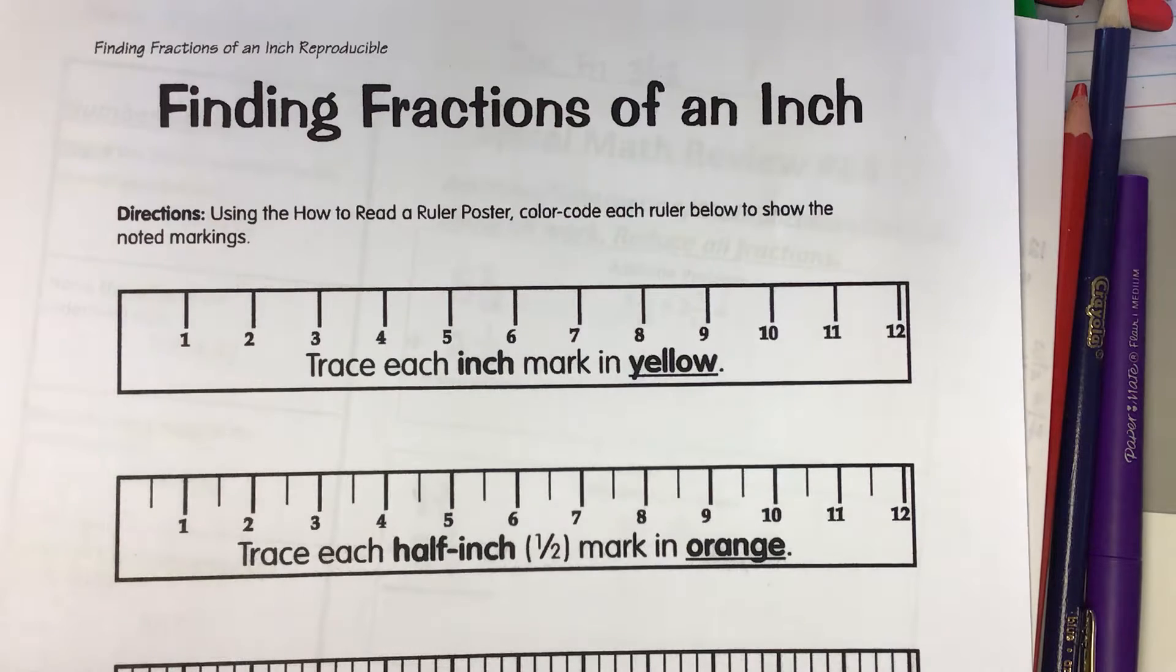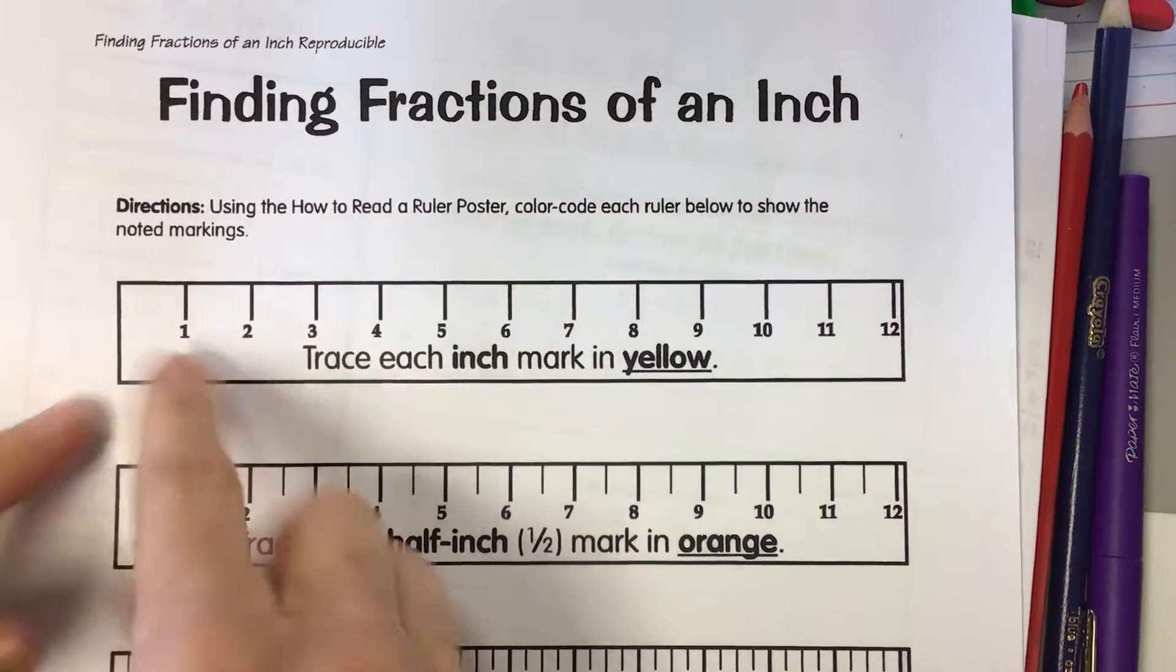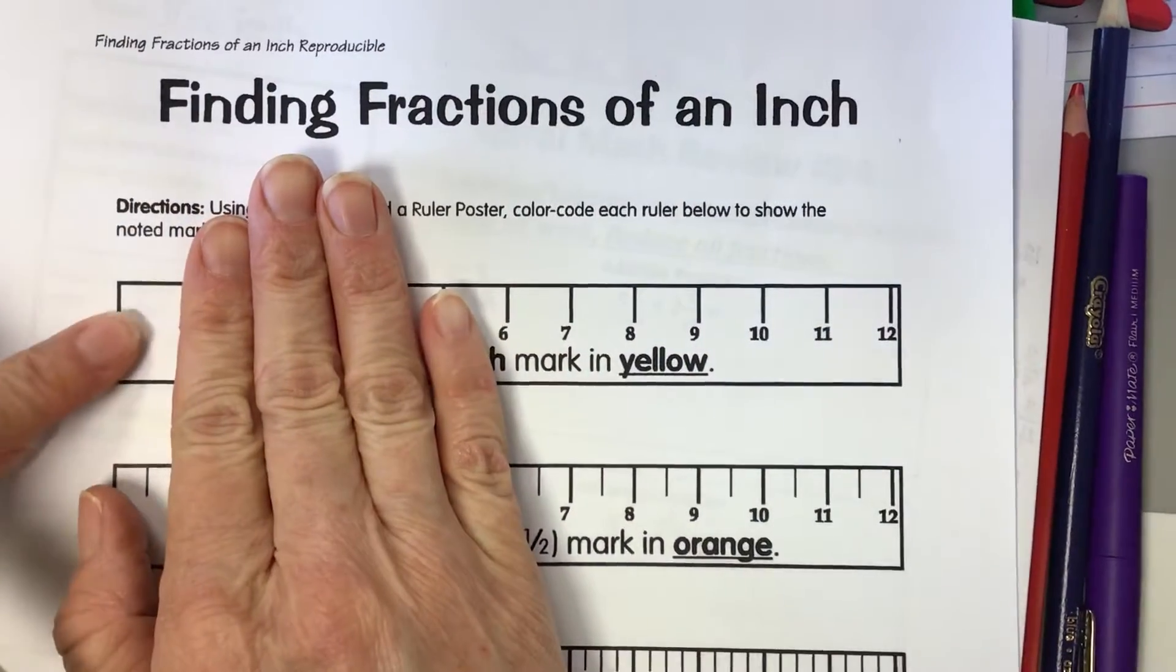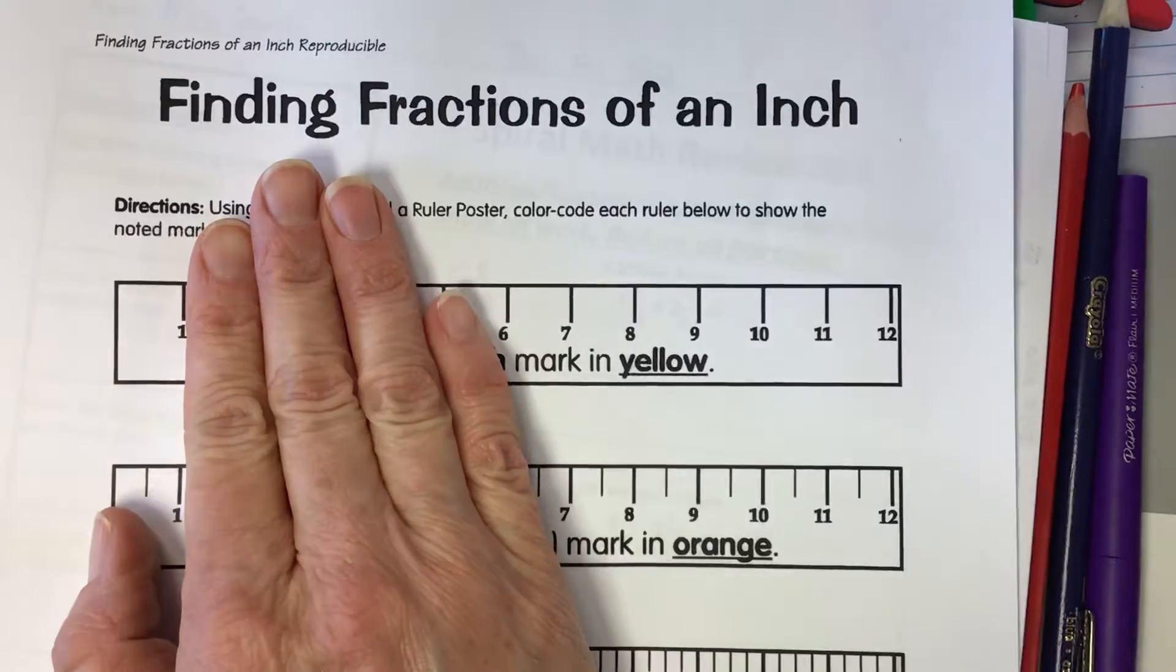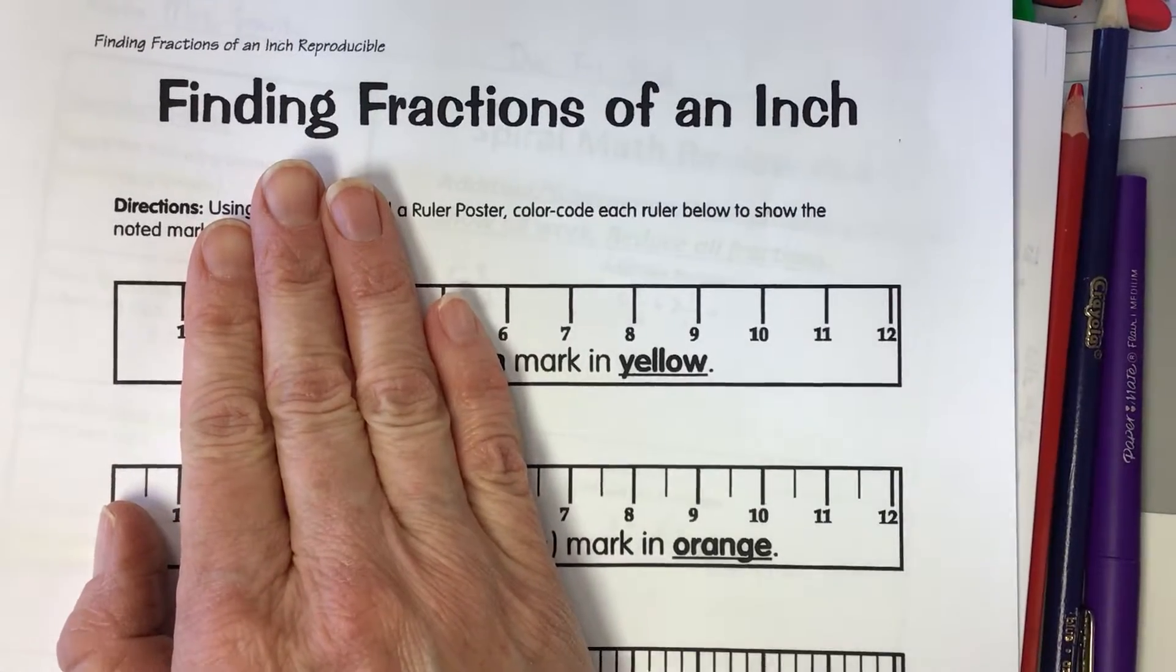And the Indiana standard says that you guys in fourth grade need to be able to measure a line or an object to the nearest eighth of an inch. So that means that each one of these inches you would divide it into eighths or eight equal parts, and then you need to be able to measure it to the nearest eighth.